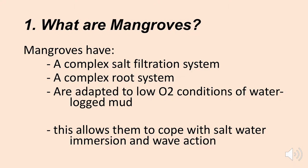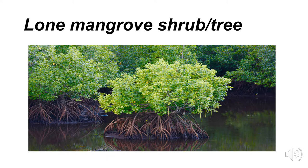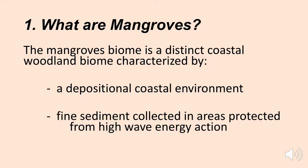Here's a lone mangrove shrub with a complex root system that digs itself down into the waterlogged mud. The mangrove biome is a distinct coastal woodland biome characterized by a depositional coastal environment. As sediments come off the land, mangroves trap that sediment. Fine sediment collects in areas protected from high wave energy, and the mangroves themselves limit wave energy, creating a calm and productive environment.